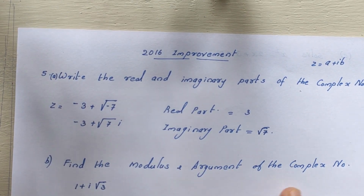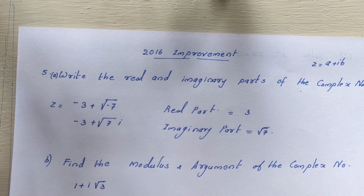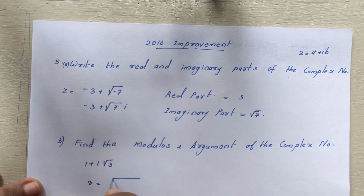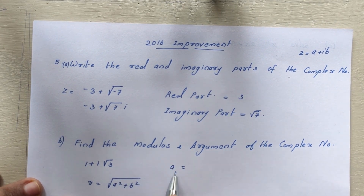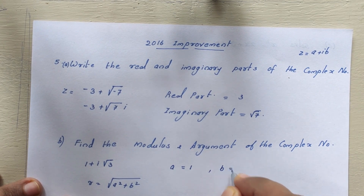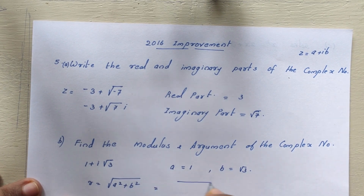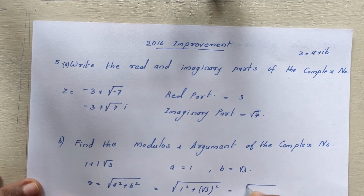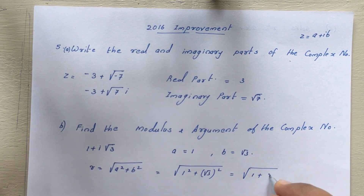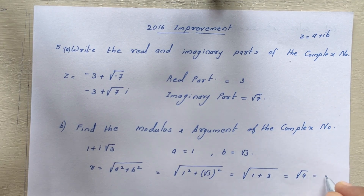Then, find the modulus and argument of the complex number 1 plus i root 3. Modulus is equal to R, which equals root of A squared plus B squared. Here A is the real part equal to 1, and B is the imaginary part equal to root 3. So R equals root of 1 squared plus root 3 squared, that is root of 1 plus 3, which equals root of 4, equal to 2.